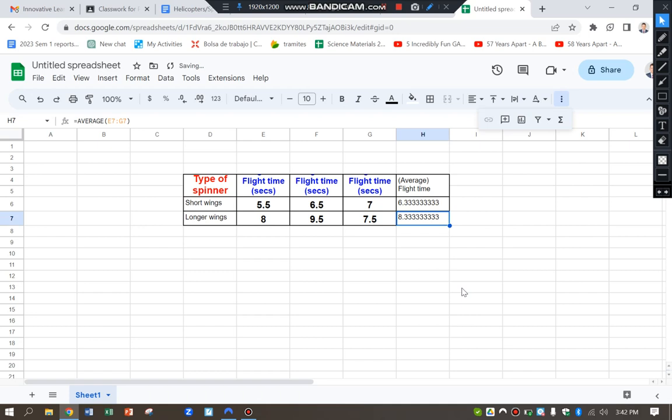I'm just going to round that up, 6.3 and 8.3. Create a new table. Copy and paste. Now I'm going to copy and paste my averages.